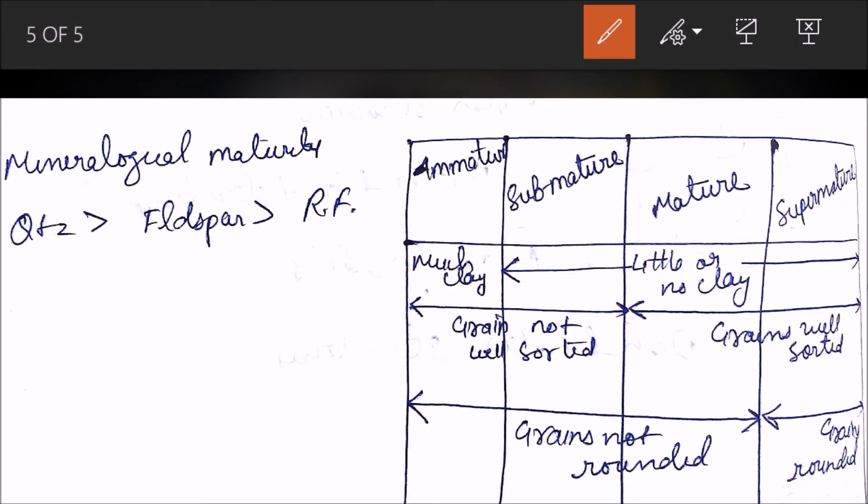Mineralogical maturity depends on this factor: quartz, feldspar, and rock fragments. More quartz means more mature rock, more maturity than feldspar, than rock fragments. In this table, this column is immature, submature, mature to supermature. In terms of clay, if there is very high amount of clay, then it is said to be immature. Little or no clay as we go from submature to supermature.